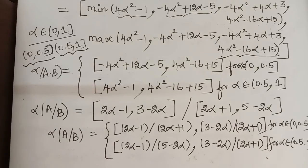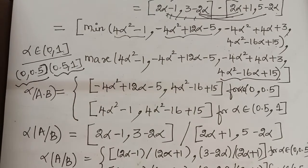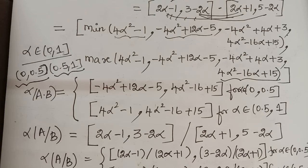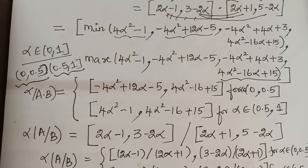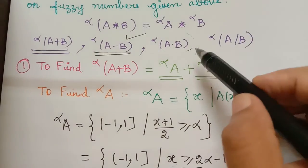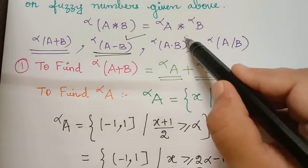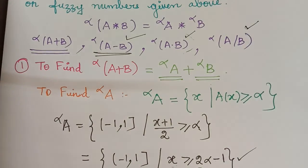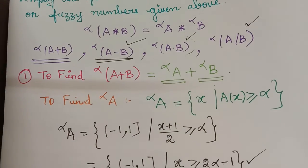Hope you have understood this concept. This is how we deal with arithmetic operations on fuzzy numbers. We had two fuzzy numbers a(x) and b(x) and we have done all four arithmetic operations upon them. Thank you.